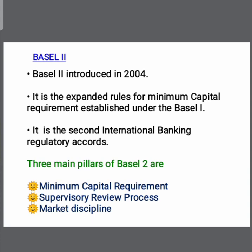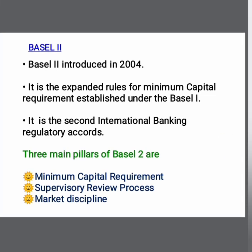The third pillar is market discipline. Banks must disclose their capital adequacy ratio and capital structure information to the public.